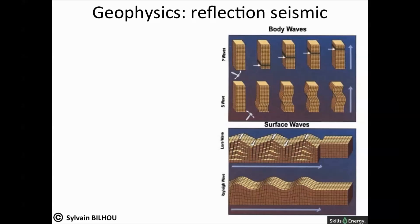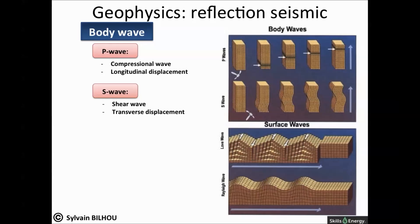Two main types of waves can propagate underground: the body waves and the surface waves. Concerning the body waves, P-waves or primary waves are the fastest waves to propagate in the earth and they are the first to be detected.